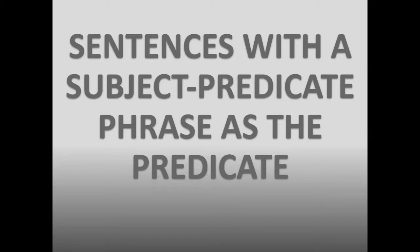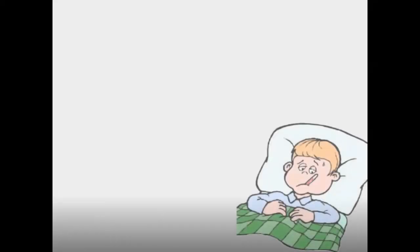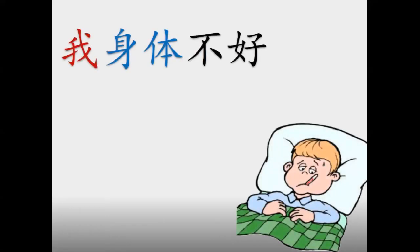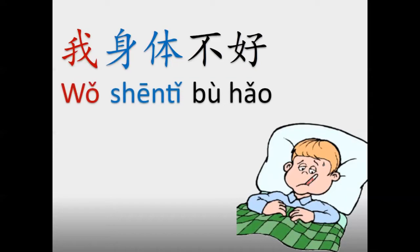Sentences with a Subject Predicate — behind this complicated name, there is a very simple thing in Chinese that we can understand using this simple example: wǒ shēntǐ bù hǎo. Here the meaning of shēntǐ is not body but health. We are referring to somebody's health. My health is not good.